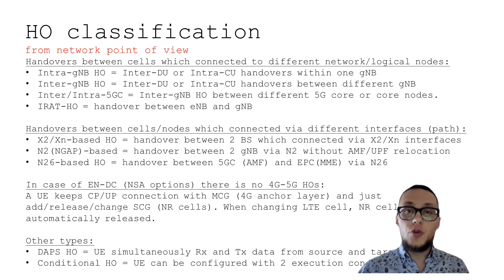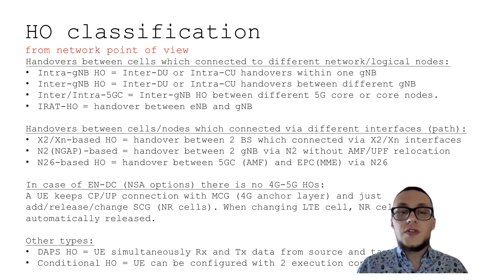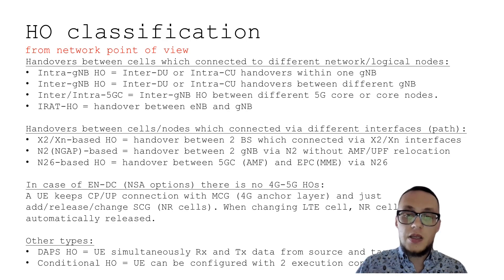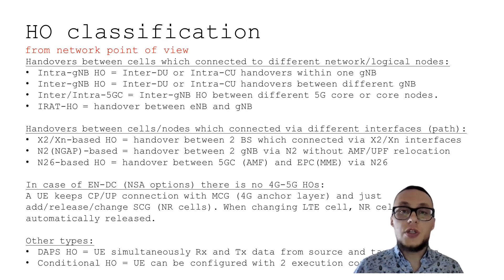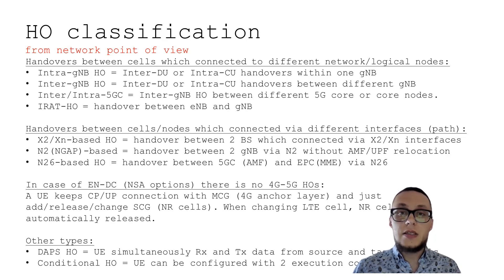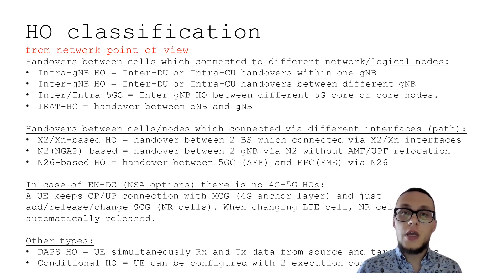There are also other very interesting types of handovers that will be covered in more detail in the next videos. One is DAPS handover — Dual Active Protocol Stack handover — where user equipment simultaneously receives and transmits data from both the source cell and the target cell, which has additional requirements on the user equipment side and reduces handover interruption time and latency. There is also conditional handover, where user equipment can be configured with two execution conditions or options, which can improve the reliability of handover procedures.